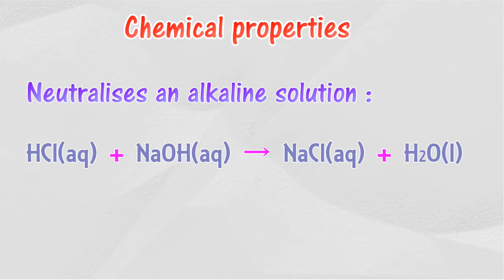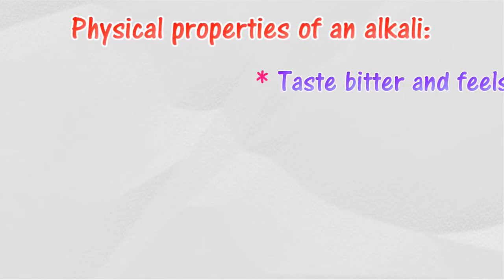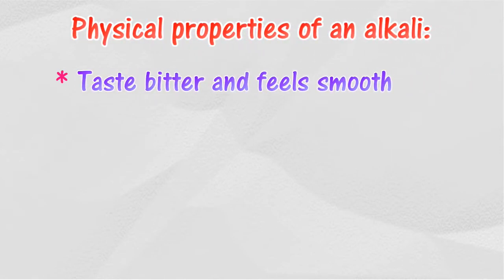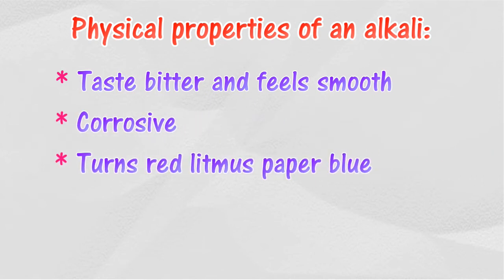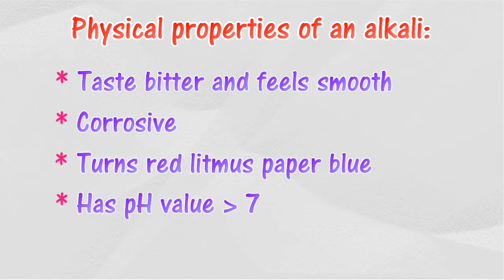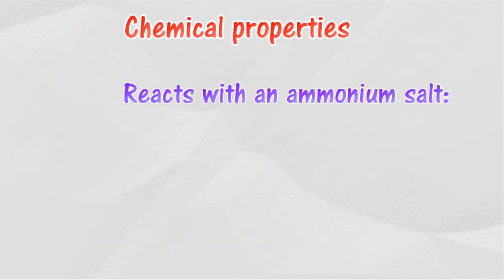An alkali has the following physical properties: it tastes bitter, feels smooth, is corrosive, turns red litmus paper blue, has a pH value more than 7, and conducts electricity.